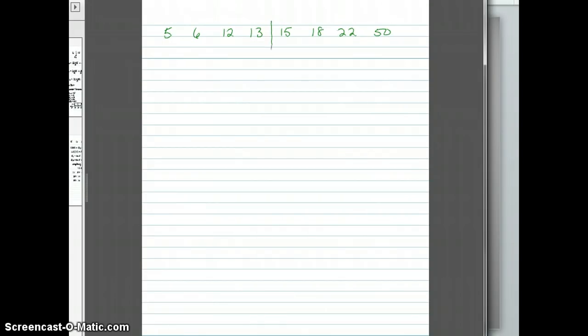Now, since this is an even number of data, our Q2, or median, will fall between 13 and 15. So we have to find the average. That means Q2 is equal to 13 plus 15 divided by 2, which is 28 divided by 2, or 14.